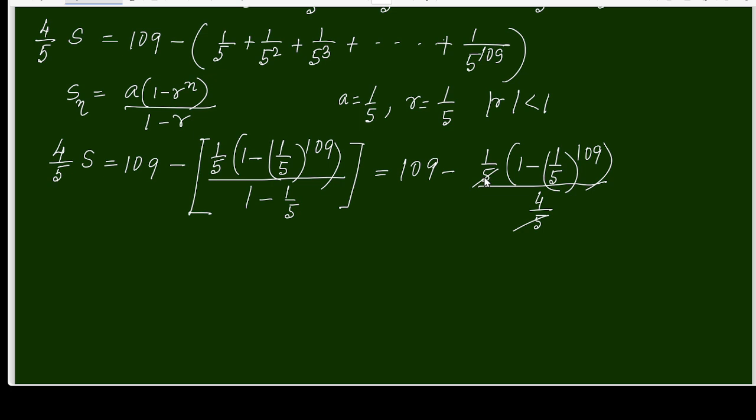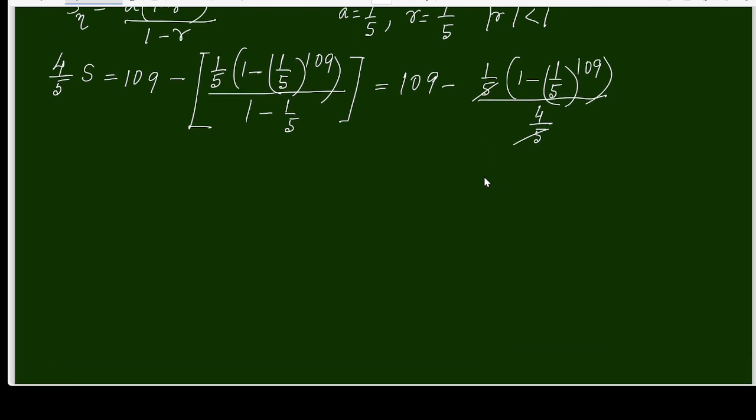Here the 4 will be cancelled. Ultimately, I am getting 4 over 5 S equals 109 minus 1 over 4 times (1 minus 1 by 5 power 109).